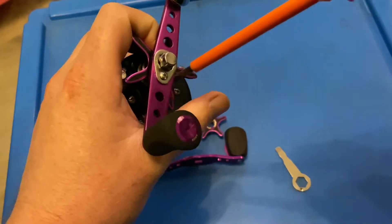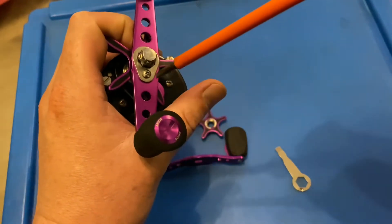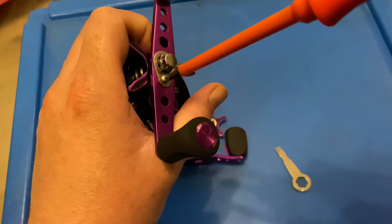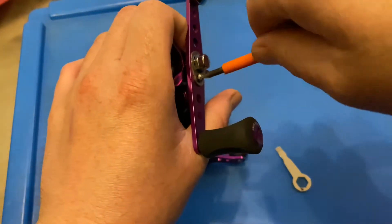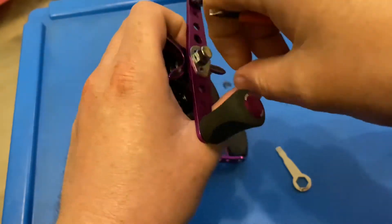These fit the Abu 6500s, the 5500s, the Daiwa 7HTs. Any information is all available on the Acceos website.